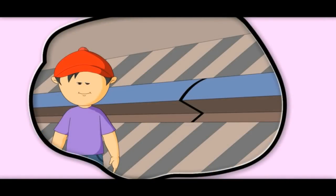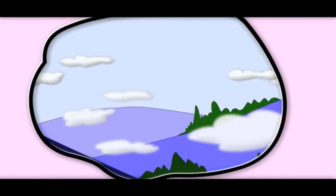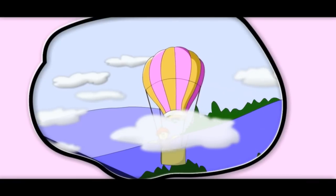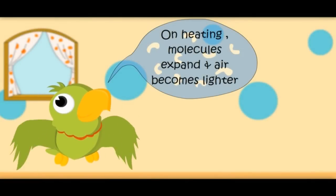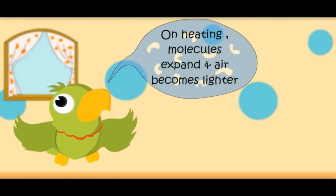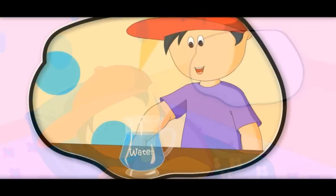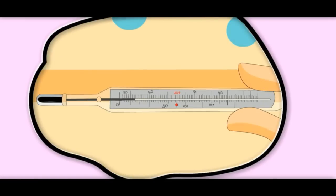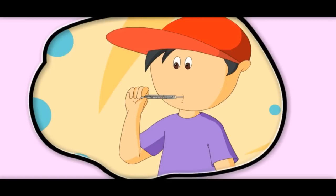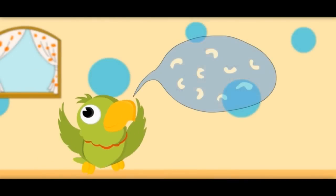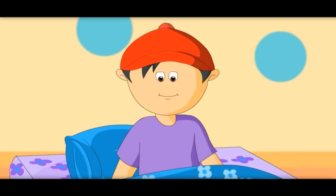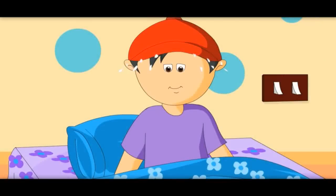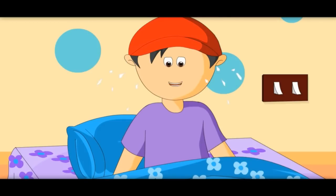In summer, railway tracks expand, that is why they keep a gap in railway tracks. On heating, air molecules in a balloon expand and it becomes lighter, so it goes up. The temperature here is 20 degrees — it is called room temperature. It is 50 degrees here — it is hot. The temperature of a normal human body is 37 degrees Celsius.